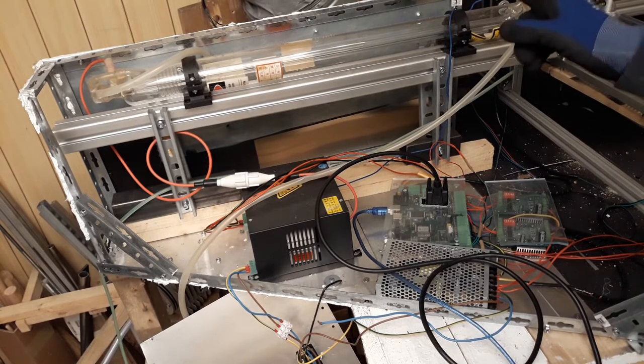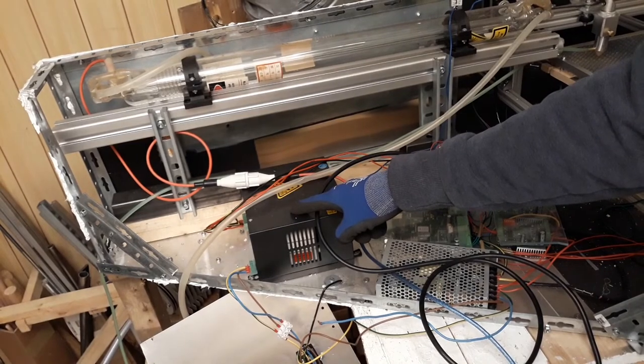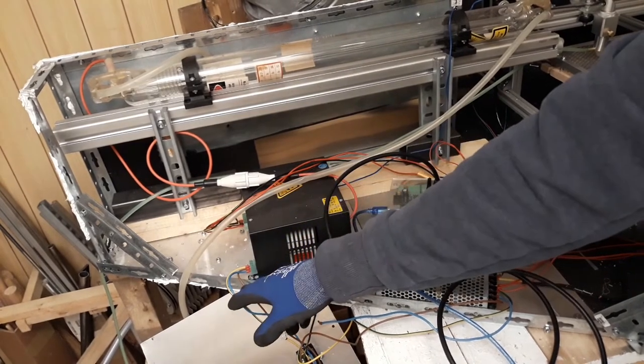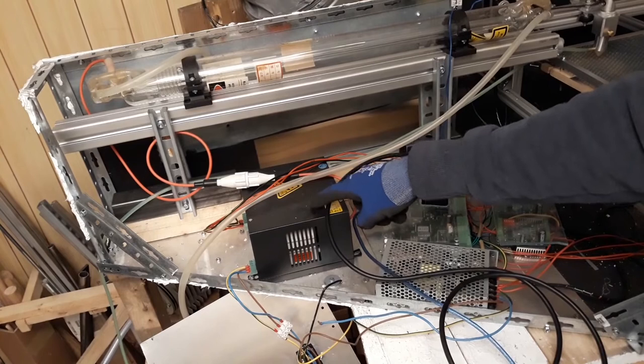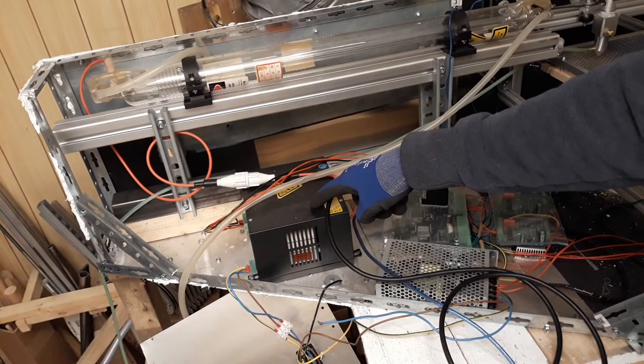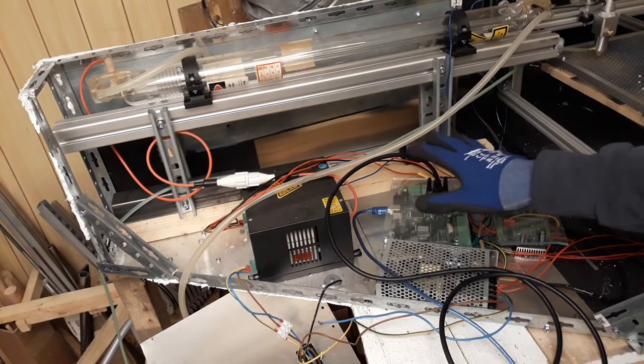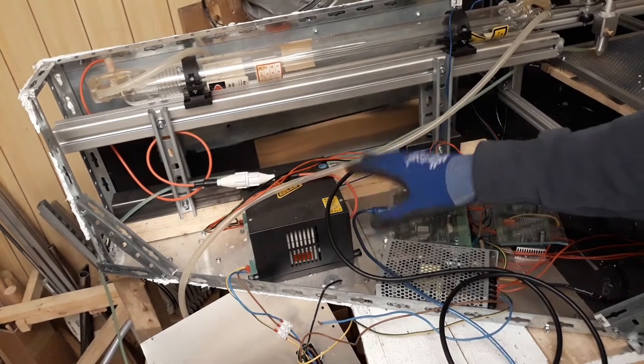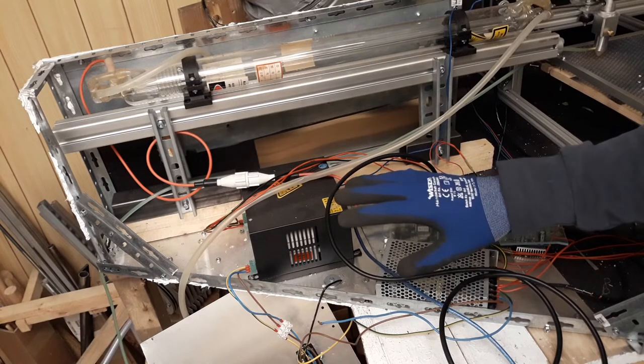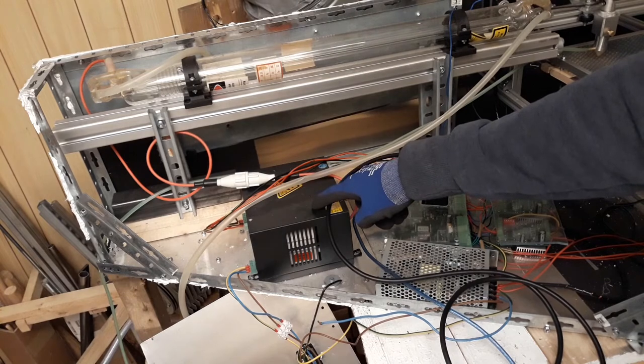Now the 20,000 volts are getting created in here. This thing turns 220 volts AC into 20,000 volts DC. And this is one of the most dangerous parts in this whole machine. So everything has to be grounded absolutely perfectly because you don't want to get shot by the voltage this bad boy can put out.